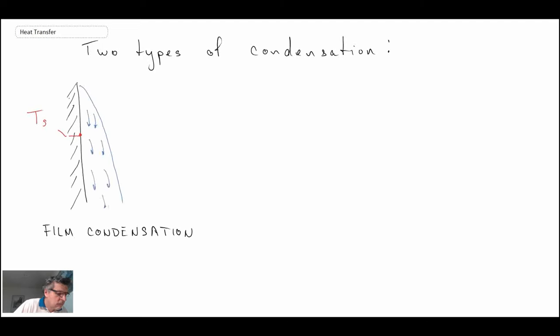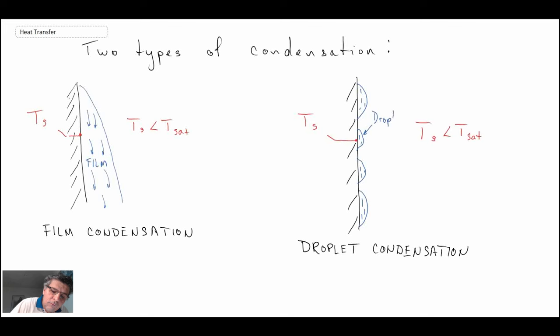There are a couple of different types of condensation that can occur. The two different types are: on the left, we have what we refer to as film condensation. What happens in film condensation is we get a film of liquid that wets the entire surface where condensation is occurring.